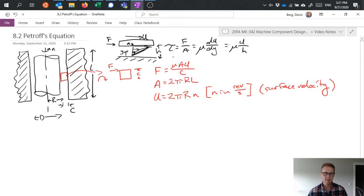Just like I saw up in the kind of simplified example of the flat plate I have a surface velocity here and c is my radial clearance.